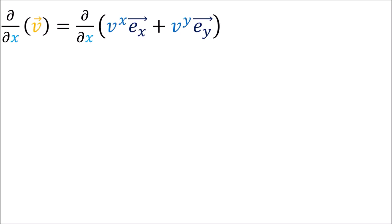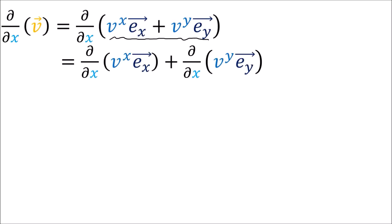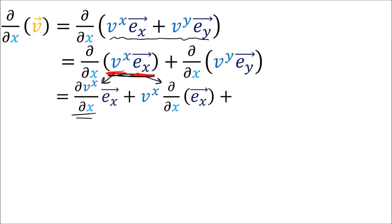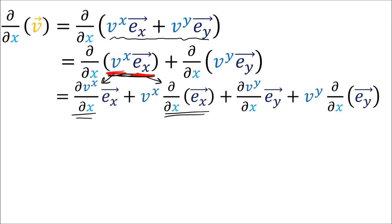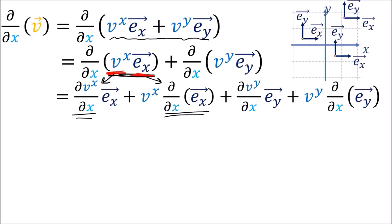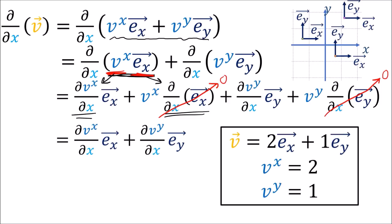We can confirm this by taking the derivative of vector field v with respect to x. We expand v in the Cartesian basis and take the derivative of each part. We need to use the product rule — one term for differentiating the component and another for differentiating the basis vector — for both the x and y parts. In Cartesian coordinates the basis vectors are constant everywhere, so their derivatives go to zero. Since the components are also constants 2 and 1, those derivatives go to zero too, giving a total rate of change of the zero vector.